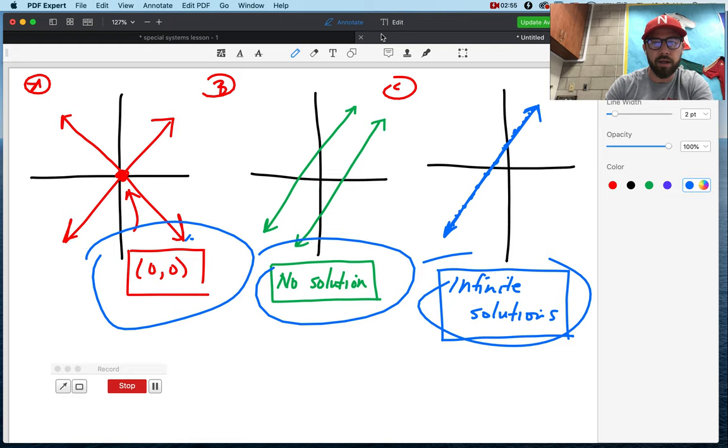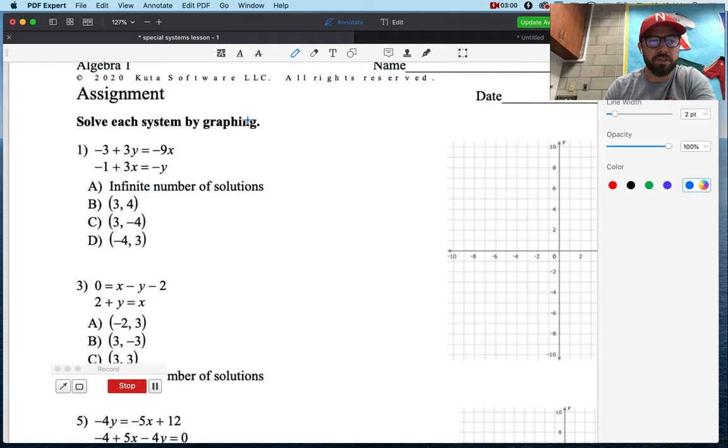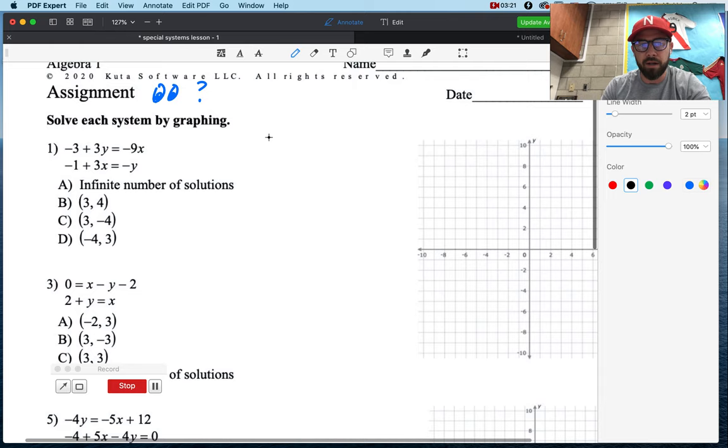These are the three options that we have for the next two to three weeks. It's always going to be, we have a point, we have no solution, or we have infinite solutions. And I want you to visibly see, you can see with your eyes what those three answers represent, right? Now, let's cruise back over here, and it says solve each system by graphing.